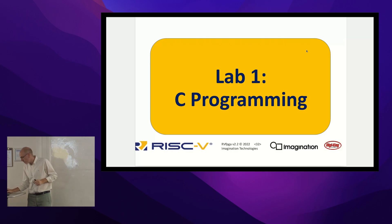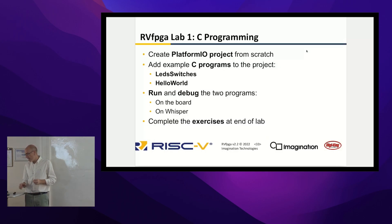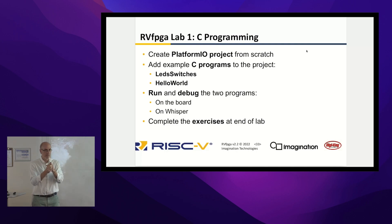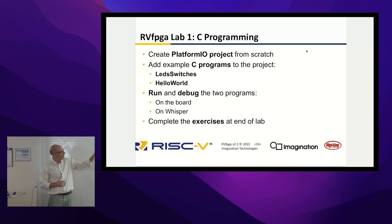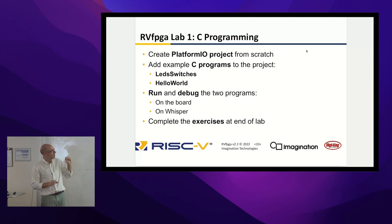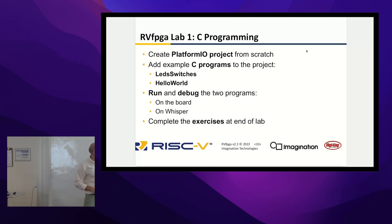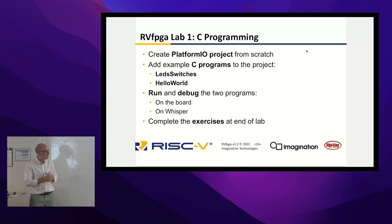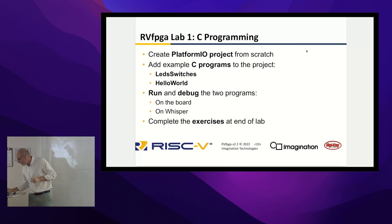Lab one is about C programming. We ask the user to create a PlatformIO project from scratch — note that the PlatformIO projects you've used were already created. We show the steps for creating a PlatformIO project from scratch, include C programs such as LED switches or hello world, and then run and debug those two programs both on the board and on Whisper.